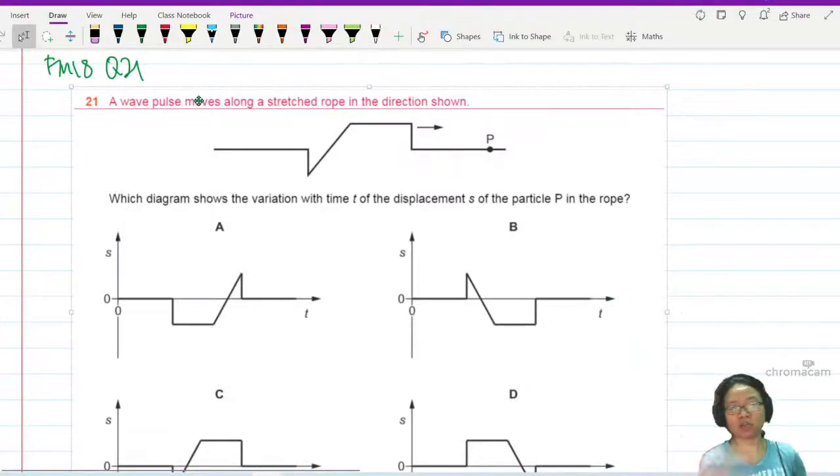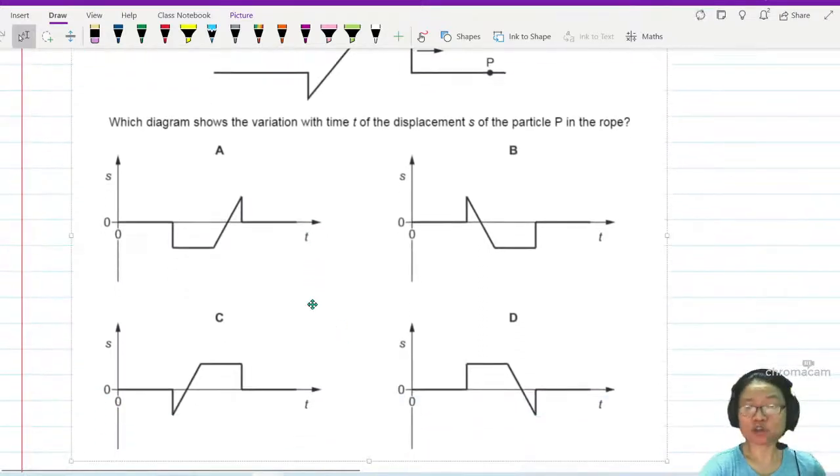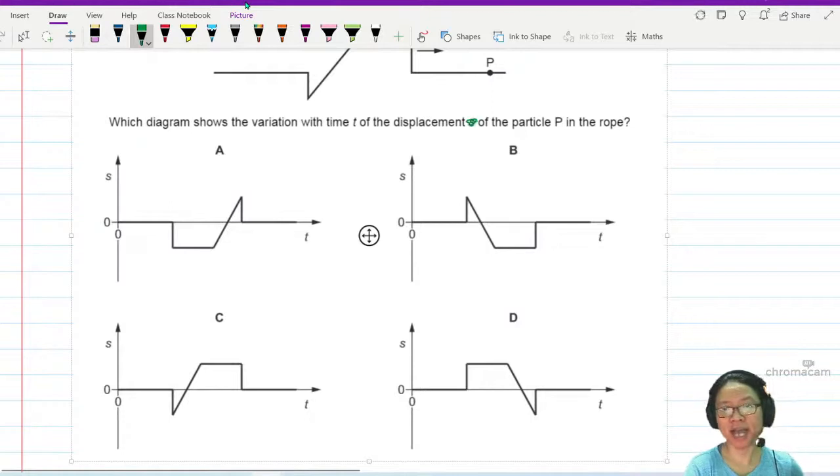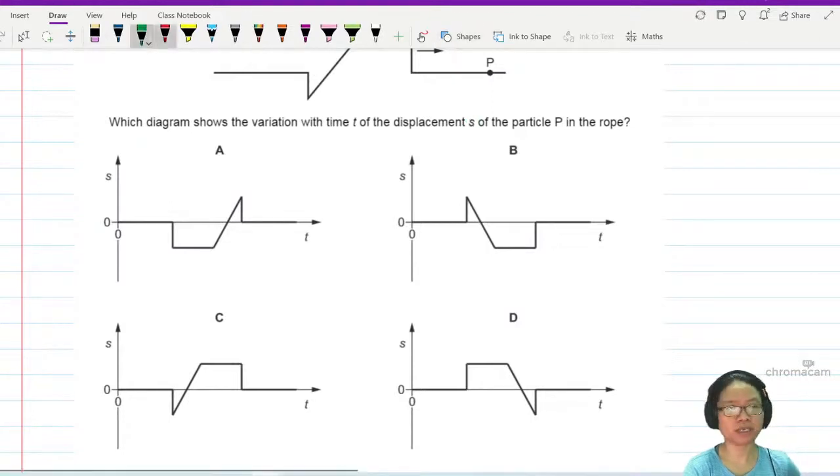Here we have a wave pulse moving along a stretched rope in the direction shown. Which diagram shows the variation with time t of the displacement s of particle P?